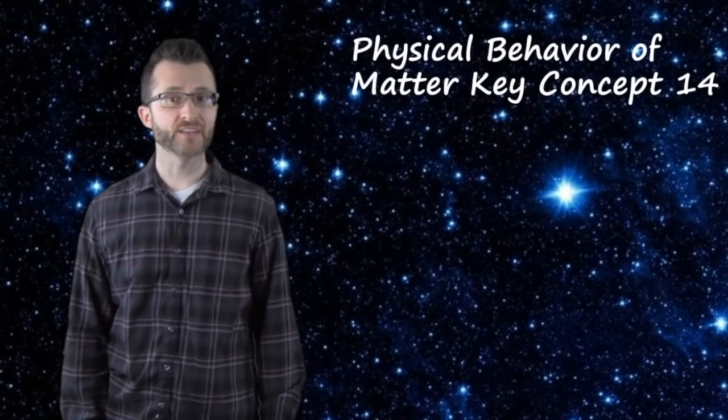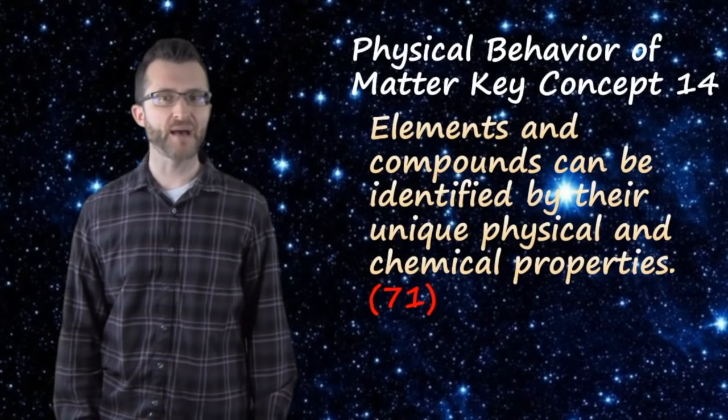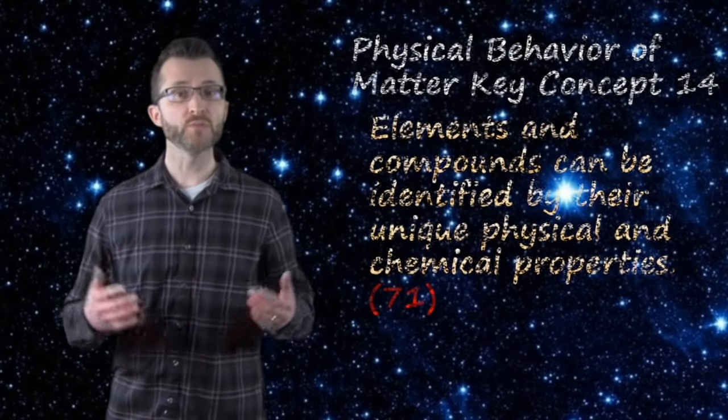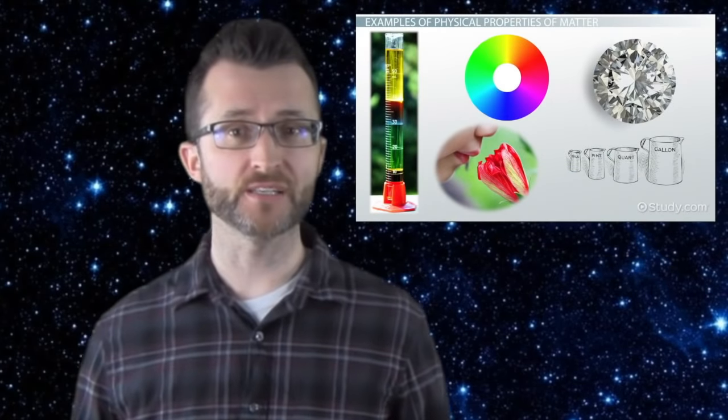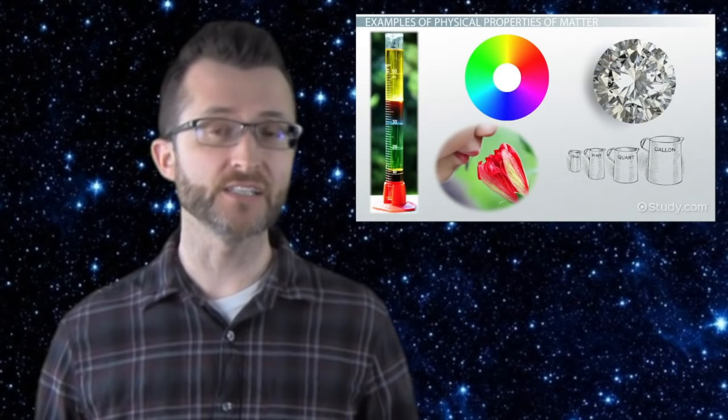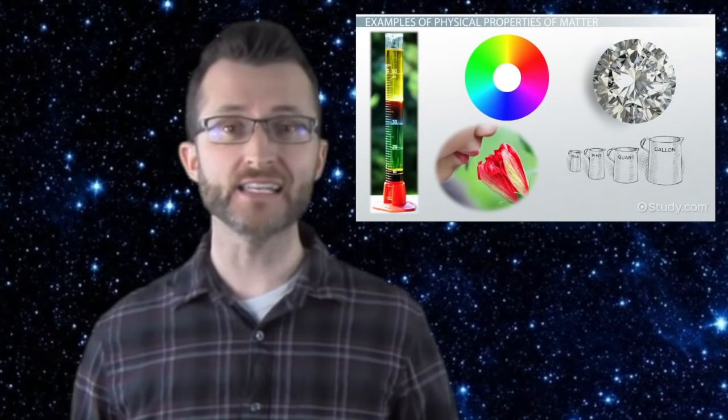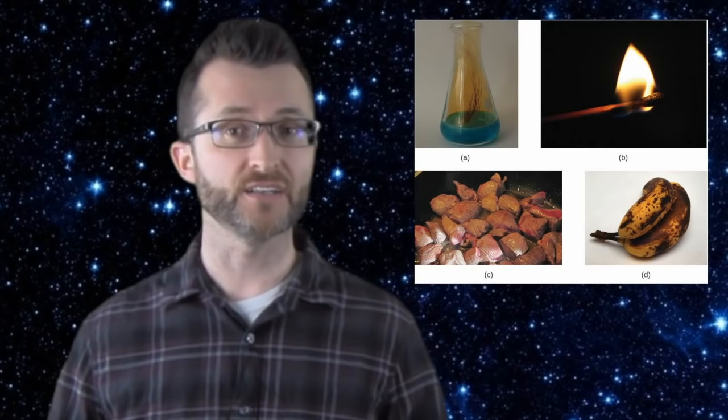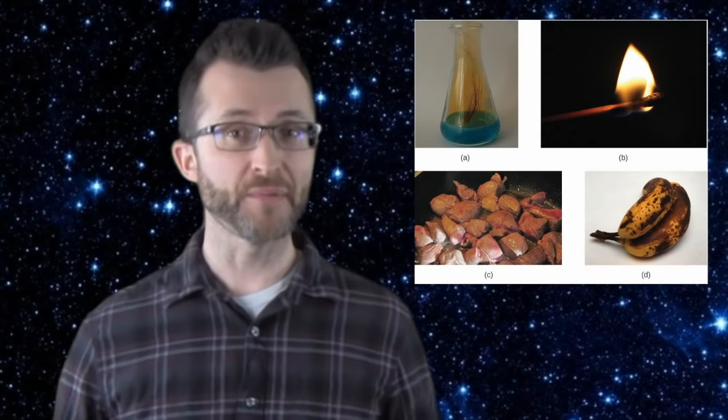Physical behavior of matter, key concept fourteen. Elements and compounds can be identified by their unique physical and chemical properties. When we observe physical properties, we don't change that matter into new matter. For example, density, melting point, and boiling point are all physical properties. Chemical properties, on the other hand, are observed by actually changing the matter into new matter. Examples include flammability, reaction with an acid, ability to rust, and any reaction with any other element.